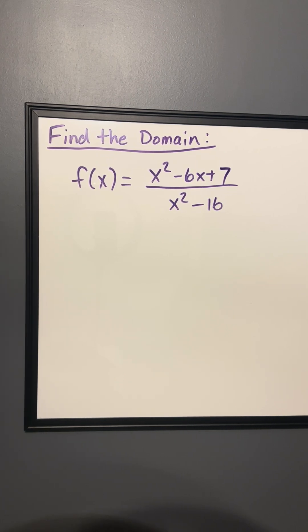Now, since this is a rational function, we need to worry about vertical asymptotes. Vertical asymptotes occur when the denominator is equal to 0, which applies to all rational functions.